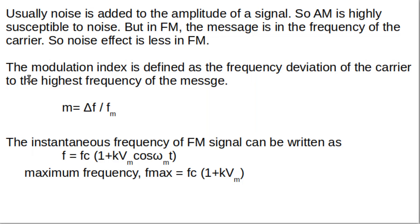Now we define the modulation index in FM. It is defined as the ratio of the frequency deviation of the carrier to the highest frequency contained in the message. So M equals ΔF divided by FM, where ΔF is the frequency deviation of the FM signal — the highest frequency appearing in the FM signal minus the original carrier frequency. Modulation index equals that frequency deviation divided by the highest frequency in the message signal.